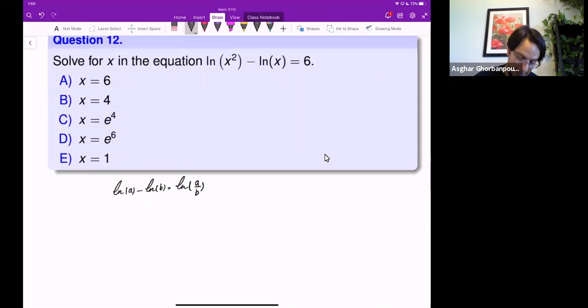So it means that this guy here, ln of x squared minus ln of x equals to 6, we can make it as ln of x squared over x equals to 6.